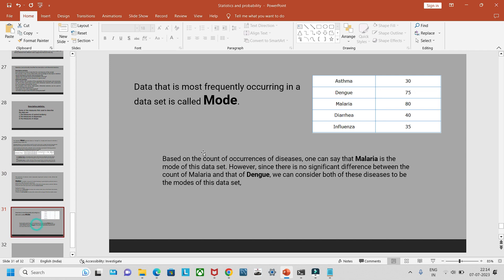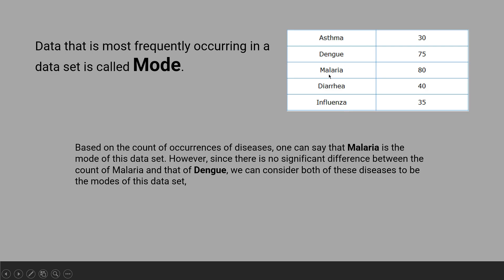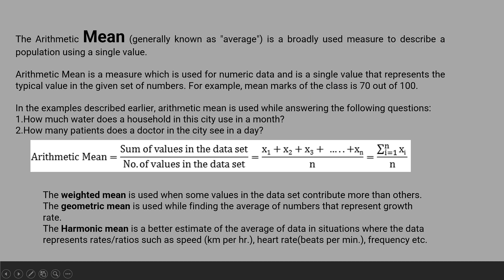The last one is mode. What is mode? It works on categorical values. Here you can see asthma appears 30 times, dengue appears 75 times, and similarly other diseases. In this scenario, malaria is considered to be the mode because it occurs 80 times, more than other things. There can be one or two modes in a data set. In this scenario, dengue and malaria have no much difference, so both can be considered as mode.